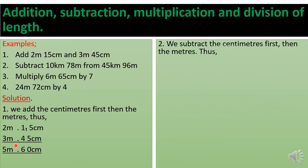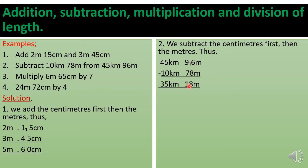For subtraction, we subtract the centimeters first, then the meters. Six minus eight cannot go, so we borrow one, making it 16 minus eight, which gives eight. The nine becomes eight, so eight minus seven is one: that's our centimeters. For the meters: five minus zero is five, four minus one is three, giving us 5 kilometers 18 meters after subtracting.